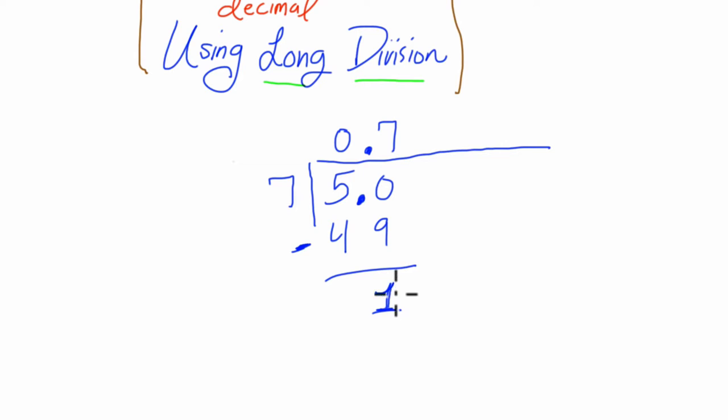Okay, anyway, so 50 minus 49 is 1, and I can think, well, 7 goes into 10, carry a zero, one time. 7 times 1 is 7, we subtract. 10 minus 7 is 3, and we just keep going with this process.